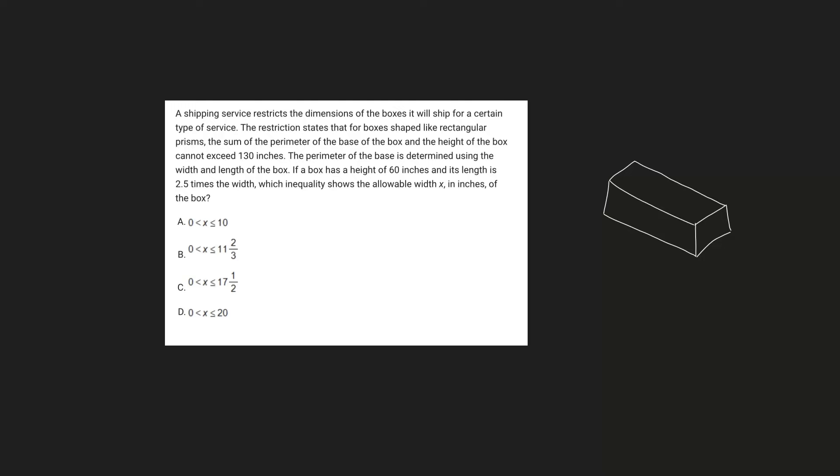The restriction states that for boxes shaped like a rectangular prism, which I've drawn one out here, the sum of the perimeter of the base of the box and the height of the box cannot exceed 130 inches. The perimeter of the base is determined using the width and length of the box. If a box has a height of 60 inches and its length is 2.5 times the width, which inequality shows the allowable width x in inches of the box.